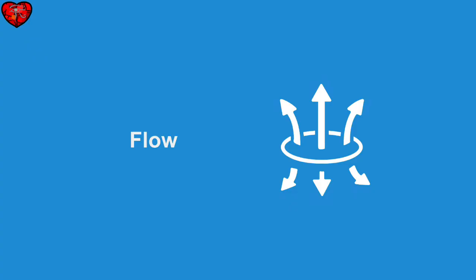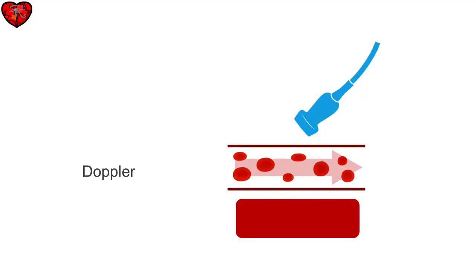Another way to tell the difference between artery and vein is to look at the direction of flow. Doppler can be used to measure direction and velocity of flow in a vessel. It is dependent on the angle that your probe is hitting the skin. The ideal angle of the ultrasound beam hitting the blood flow is at about 60 degrees, or there will be inaccurate information about the flow you are examining.